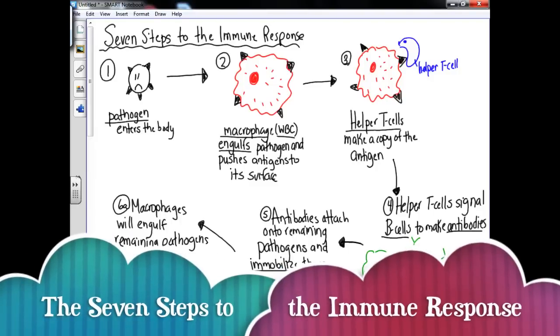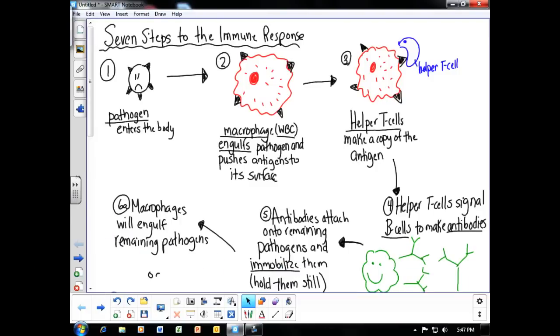This video lesson is on the seven steps to the immune response. If a pathogen enters the body and passes the first line of defense, the body will start the immune response. The immune response involves several different white blood cells, all of which have their own function.